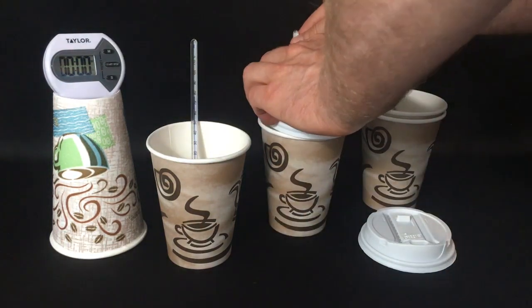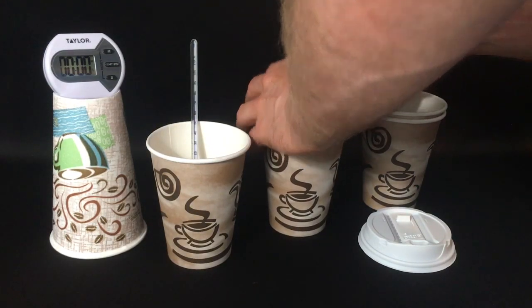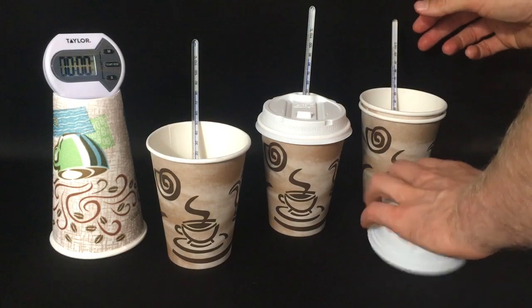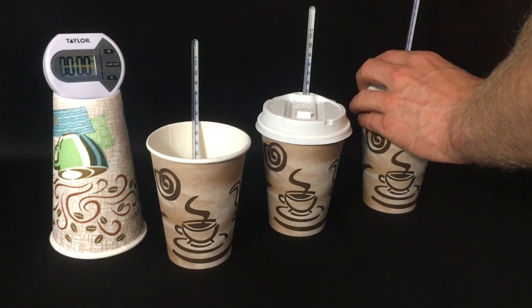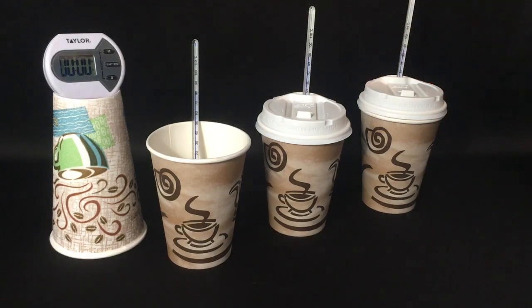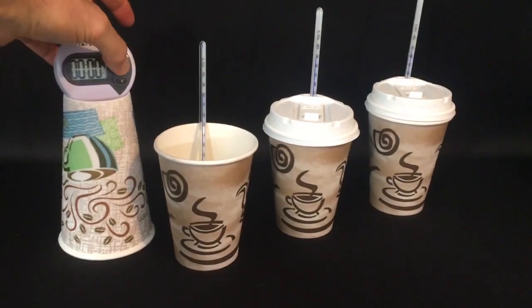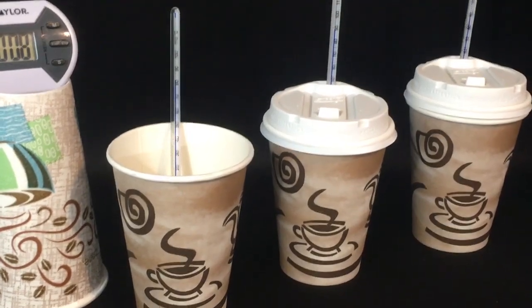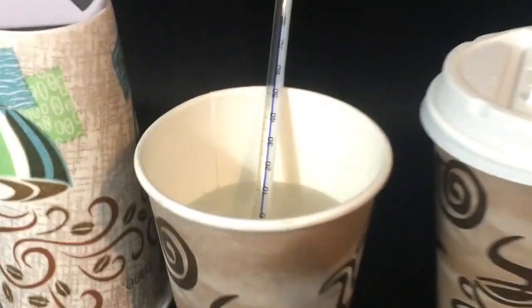And we will put the lids on these coffee cups. And we'll start our time. And, of course, let's zoom in and check the initial temperatures at the start time. So, we have the first thermometer, which, remember, it's off by three degrees. It's reading 82, which means it's starting at 85 degrees Celsius.